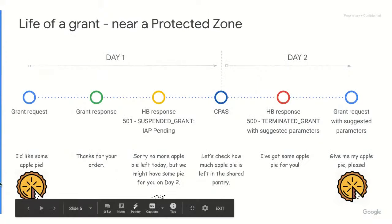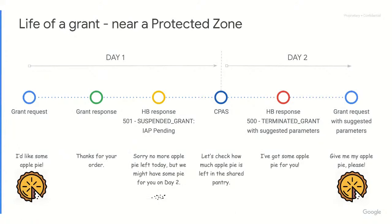Let's move on to our first scenario. In this scenario we have a CBSD that is near a protected zone. On day one, this device makes a grant request and receives a grant response indicating success. However, on the first heartbeat the device gets a 501 suspended — suspended IAP pending message. This means that the SASS is unable to authorize the grant at the power requested.